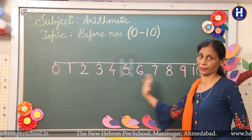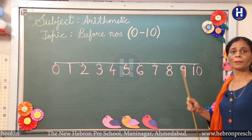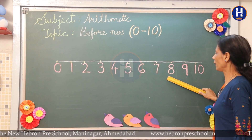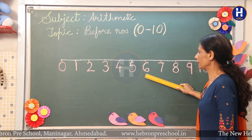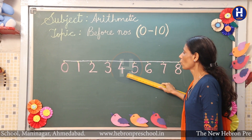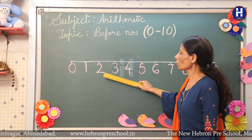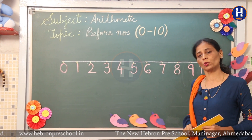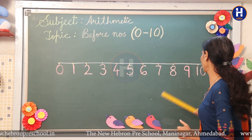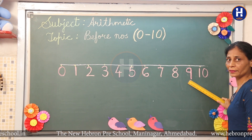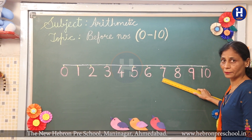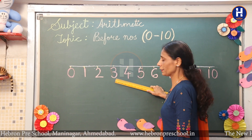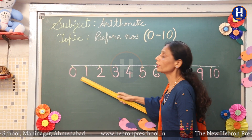Ab hum isko reverse mein count karenge. Reverse means ulta se, peeche se, back se. Okay, come on, repeat after me: 10, 9, 8, 7, 6, 5, 4, 3, 2, 1, 0. Now we will repeat once again: 10, 9, 8, 7, 6, 5, 4, 3, 2, 1, 0.